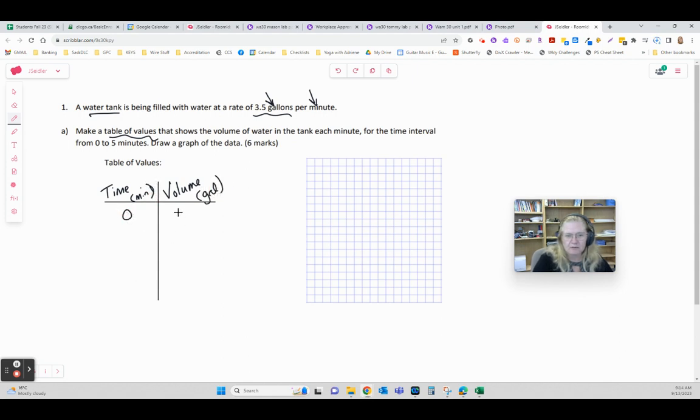Time's going to start at time zero and obviously that water tank will be empty at that point so we're still at zero and we're told to go up to five minutes. Time will go zero, one, two, three, four, five and our volume is going to gain three and a half gallons every minute. So at the first minute we know we'll have made it to three and a half gallons, another three and a half in the next minute and so on until we have our volumes.